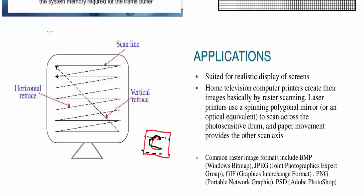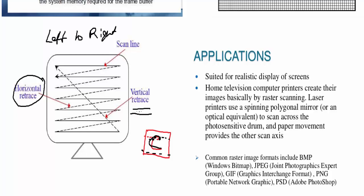The scanning goes from left to right. After completing a line, it returns from right to left — this return path is known as the horizontal retrace, shown as dotted lines. When it traces from the bottom-right back to the top-left, it is known as the vertical retrace. This is how tracing is performed in a raster scan system.